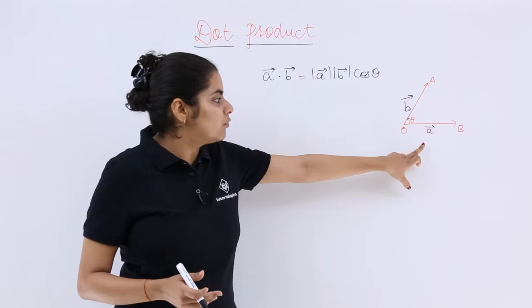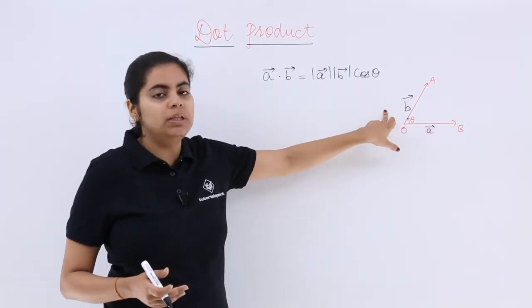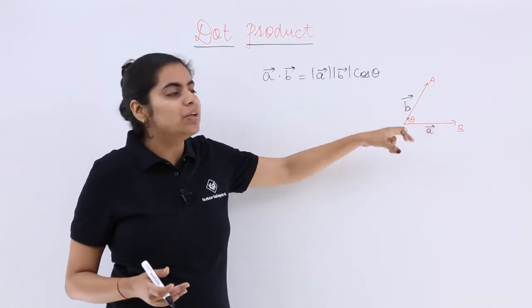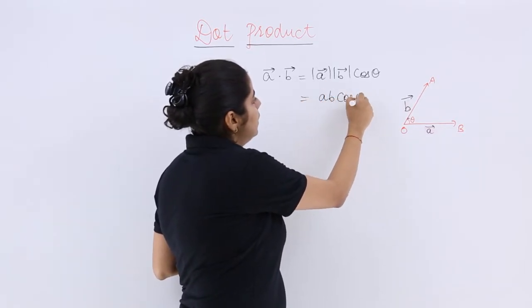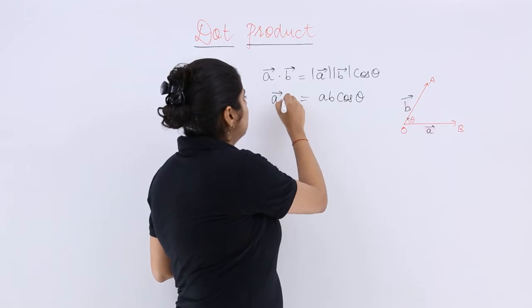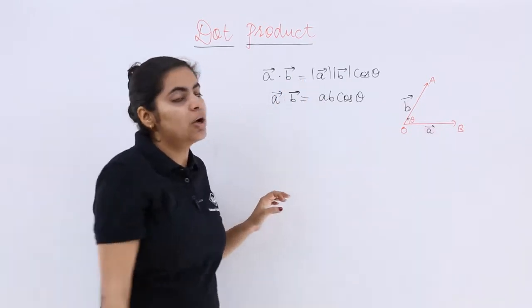So scalar product of vector a with respect to vector b or scalar product of a and b vector is known as mod a mod b cos theta or simply a b cos theta. So that is known as the scalar product.